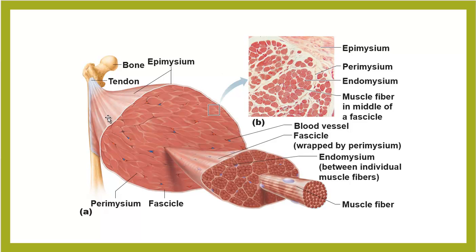The outside that holds the entire muscle like a bicep together would be the epimysium. You also have a perimysium right here that goes around that fascicle in white. If you notice, there's white in between all these little muscle fibers or muscle cells, and that would be the endomysium. So the whole thing is wrapped up in a lot of layers of connective tissue.